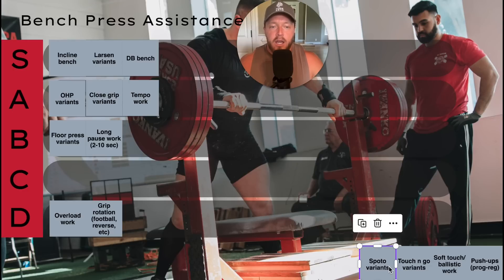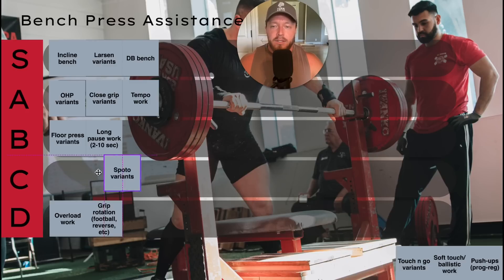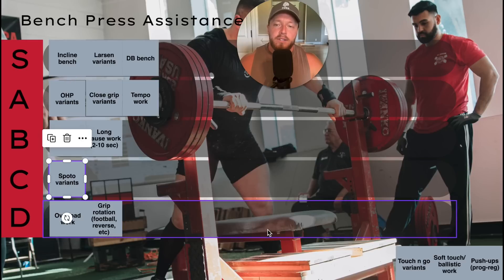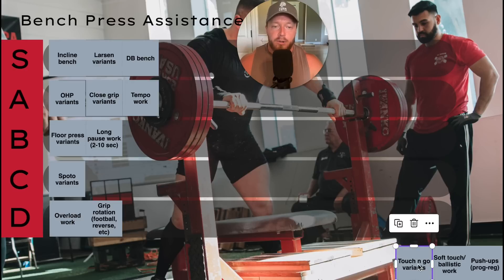Spoto variants — and when I say variants I mean anything like a spoto: close grip spoto, concentric spoto, eccentric spoto, there's a lot of different ways to do this. I'm going to put this in C tier. It's just not that great to me. I use it every once in a while to work on stability, especially for guys who are really ballistic with their bench press, but that's about it. Sometimes I'll use it just for pure novelty. I do like it close grip a lot more than the normal competition-style grip press.